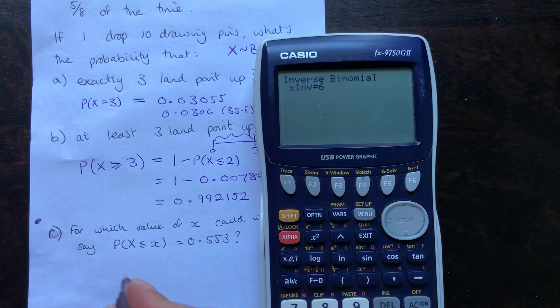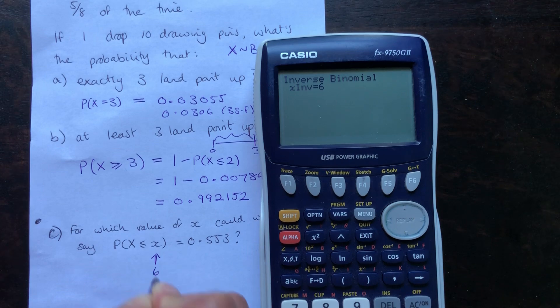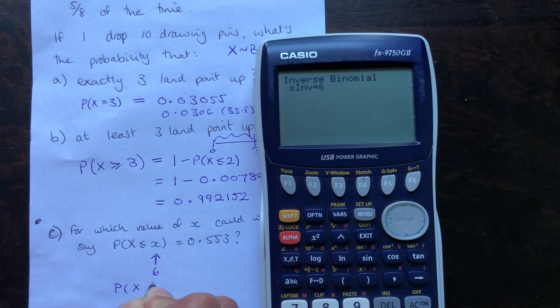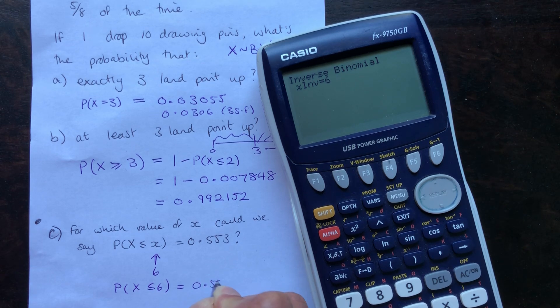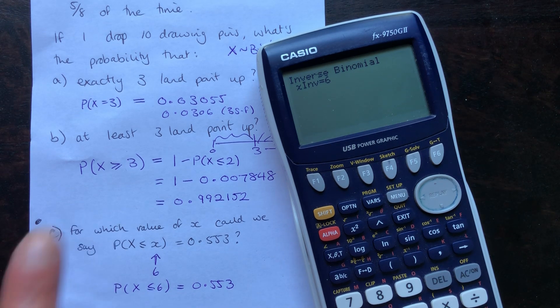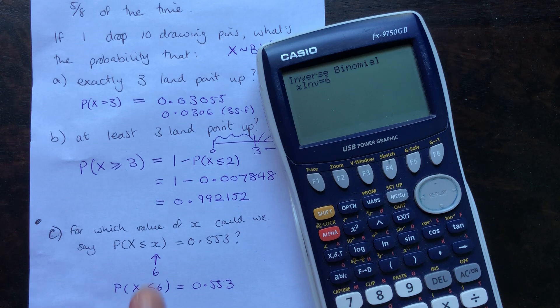This tells us that the x value was 6. So the probability that x is less than or equal to 6 will give us that required 0.553. This means our chance of dropping 6 or less of these drawing pins point up will be 0.553.